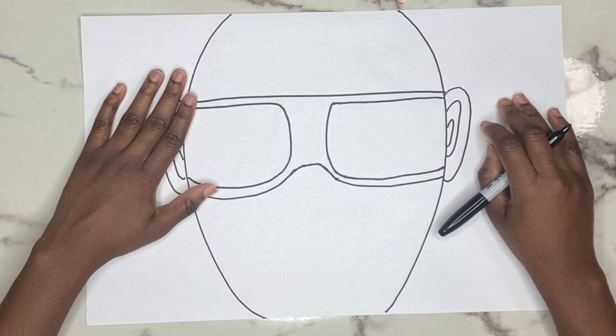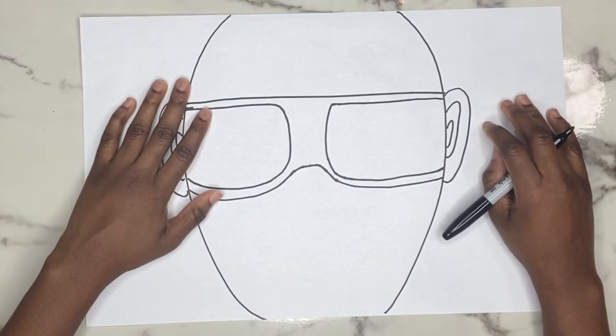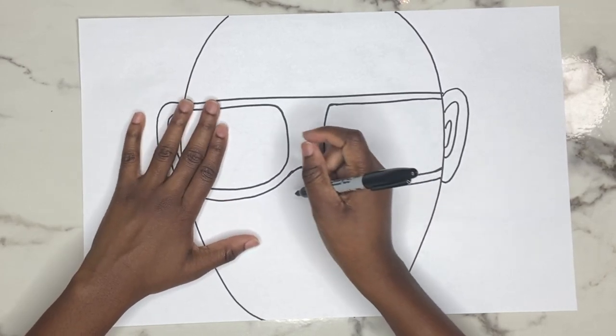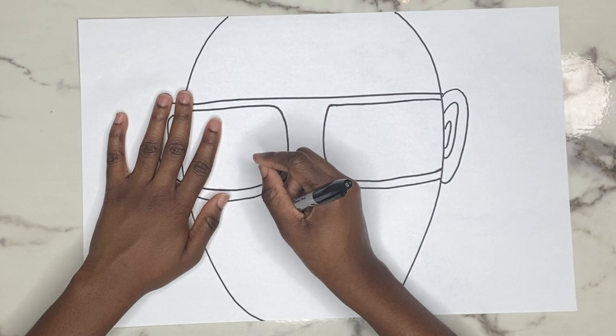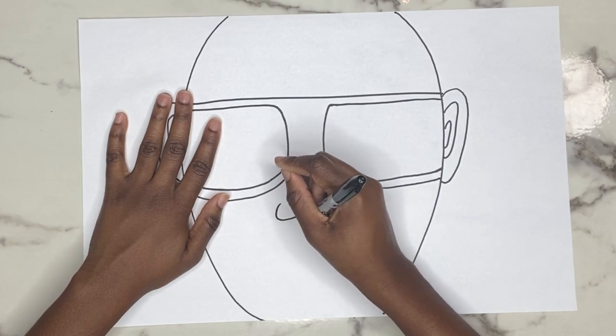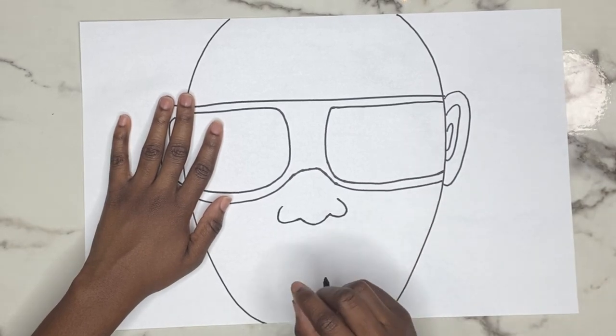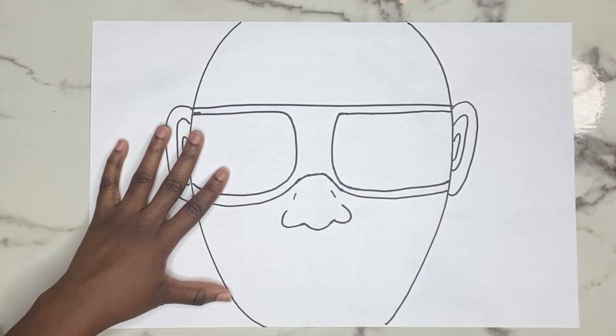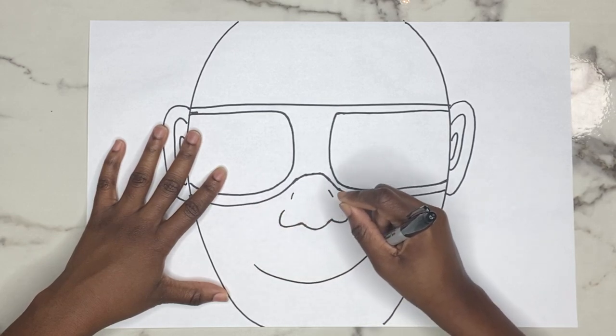Okay, now I'm going to work on drawing my nose. With my nose, it's a small hump, big curve, little hump, little hump, and voila you have your nose.